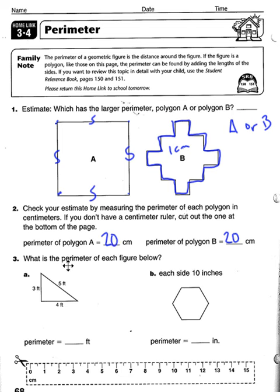Number 3 asks, what is the perimeter of each figure below? For 3, for A, they have 3 plus 5 is 8, plus 4 is 12.